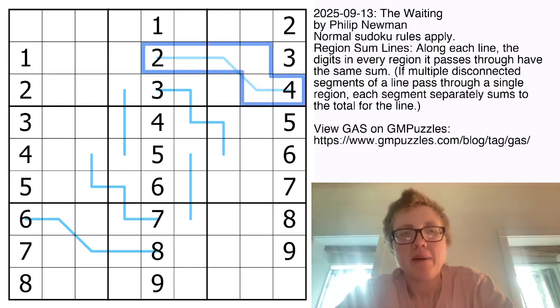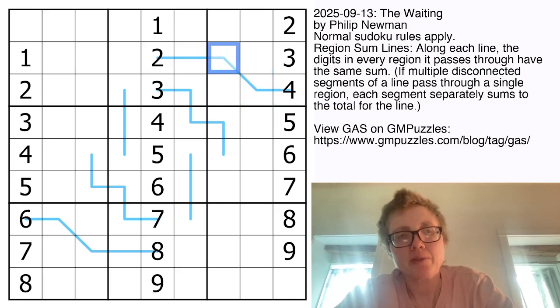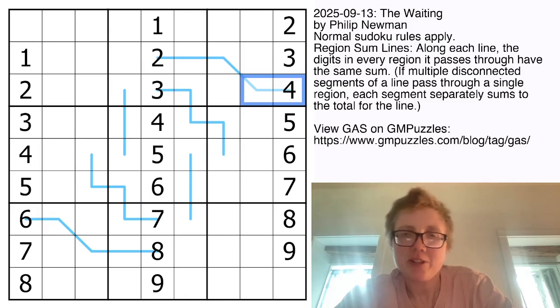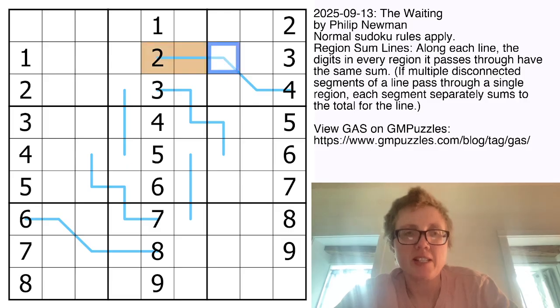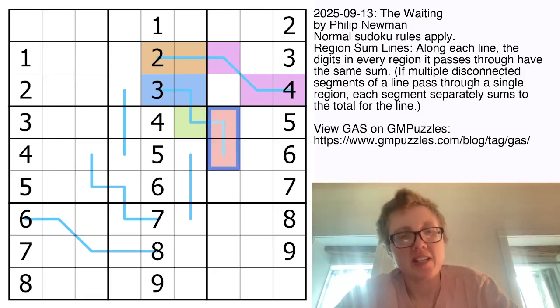This blue line passes through region 2 and region 3. The rule for region-sum-line says that within each of the regions that the line goes through, the sum of the digits on the line is the same. So the sum of these two digits is exactly equal to the sum of these three digits. Or over here, this one goes through three different regions, so the sum of these digits is equal to the value of this digit, which is equal to the sum of these digits, and so on.